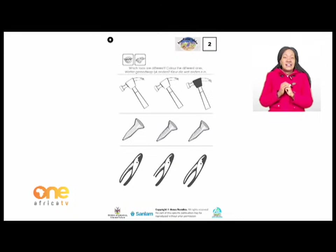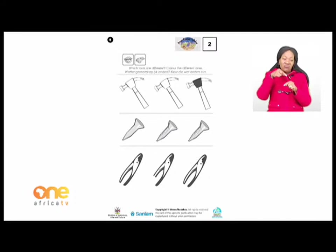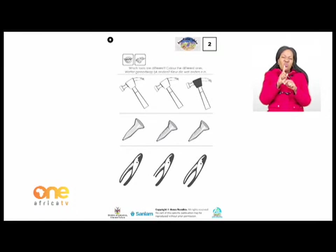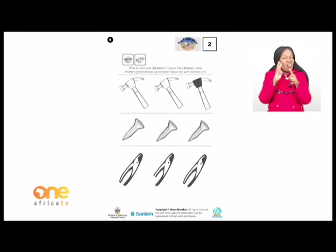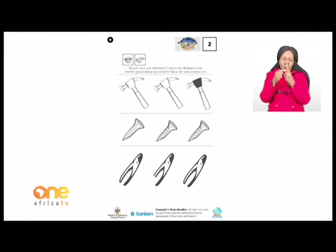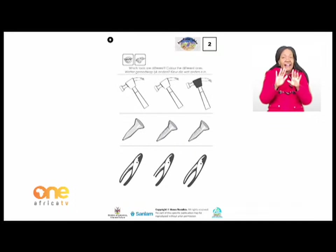Let's look at the next row — the second row. I can see a set of nails. The first one is a plain nail. The second one has some lines on it and looks like a screw. The third one also has lines and looks like a screw. Which nail is different from the three? I would like you to find out and color in the one that is different.